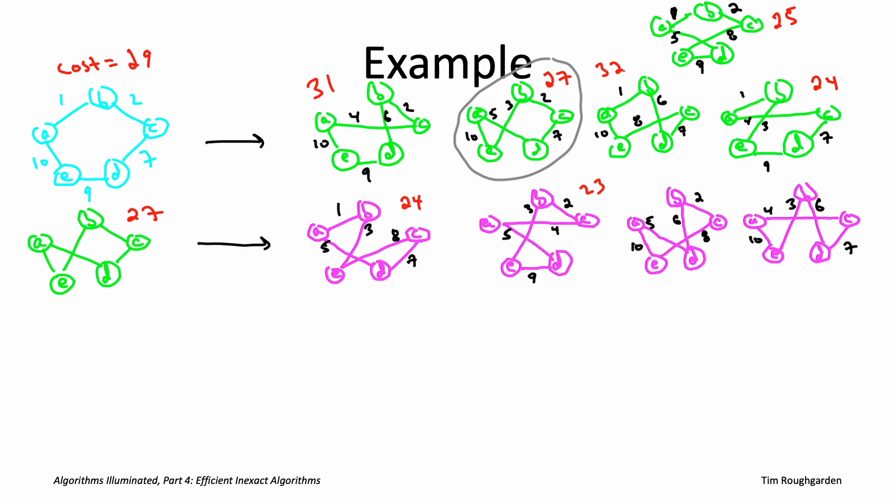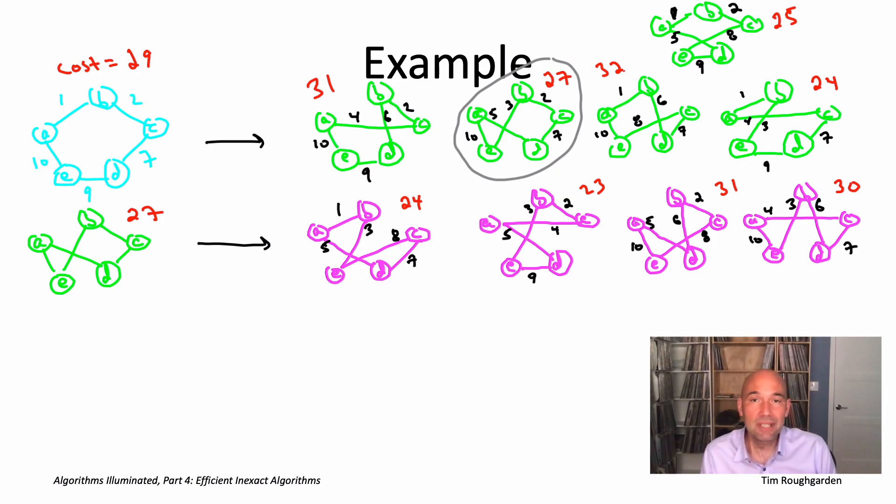The third of the two changes, that gives us a tour which has total cost 31. So that would not be better. Not an improving two-change. Meanwhile, the fourth of the two changes would give us a tour with cost 30. So once again, the two-opt heuristic has two possible options, two different improving two changes, either of the first two. If we're again using this approach where as soon as you find one, you go ahead and execute it, then we would move next to this cost 24 tour.